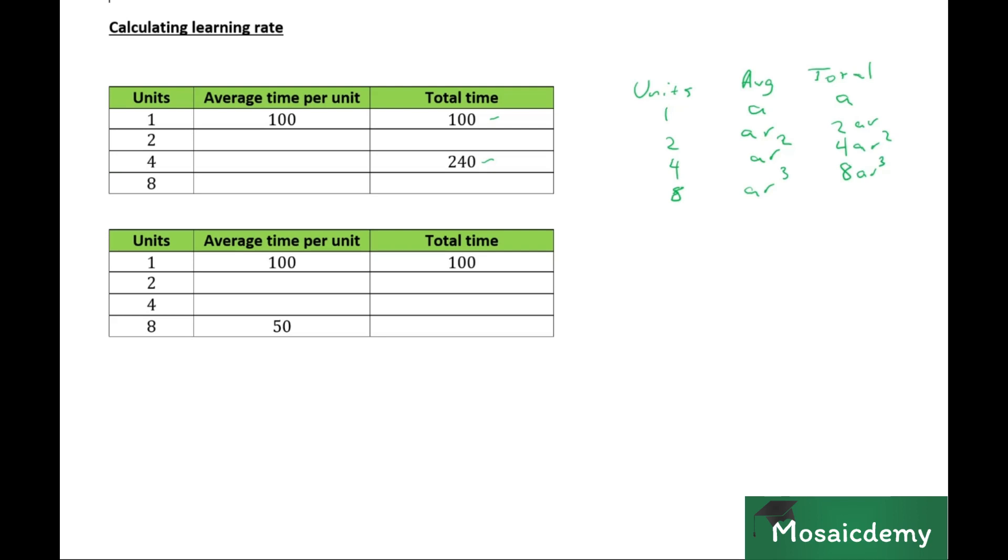But what we find now is we have the total time for four units. If we go by our base table, the total time for four units, the formula is four AR squared. In other words, four AR squared in this case is equal to 240. And we know that A is 100, the time for the first unit.